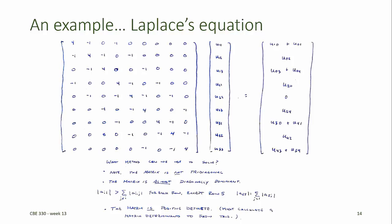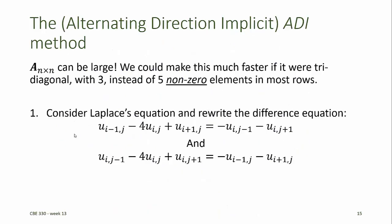In the last video, we introduced the finite difference method for solving elliptic partial differential equations with Dirichlet boundary conditions. This resulted in a large number of simultaneous equations for all of the unknown mesh points. Fortunately, the matrix was symmetric and positive definite, and therefore it could be solved using the iterative Gauss-Seidel method. We could make this even faster if it were a tridiagonal matrix with three instead of five non-zero elements in most rows.